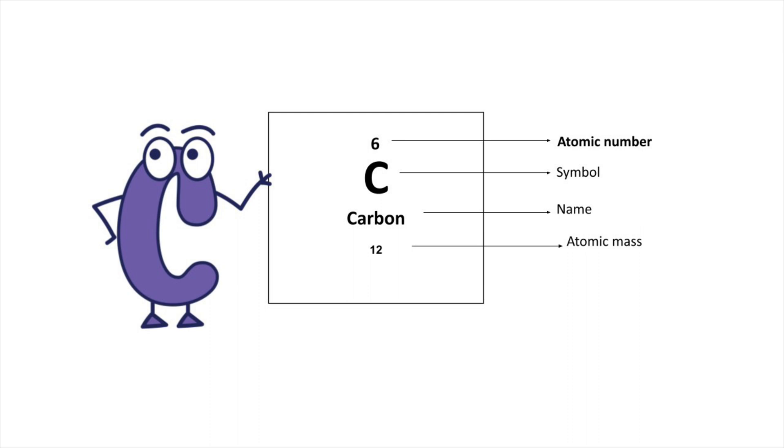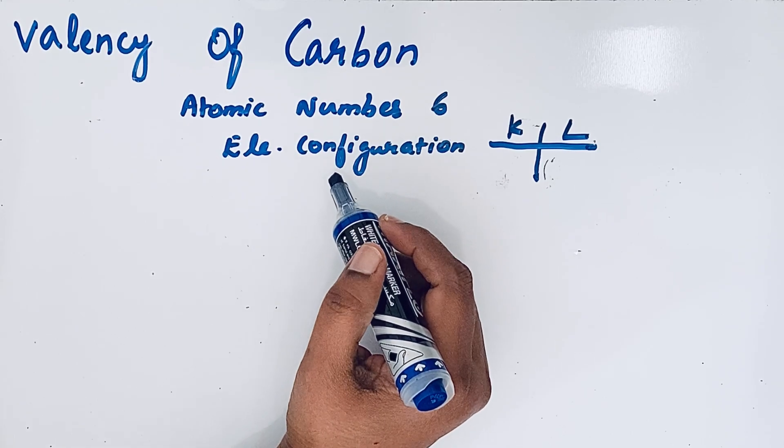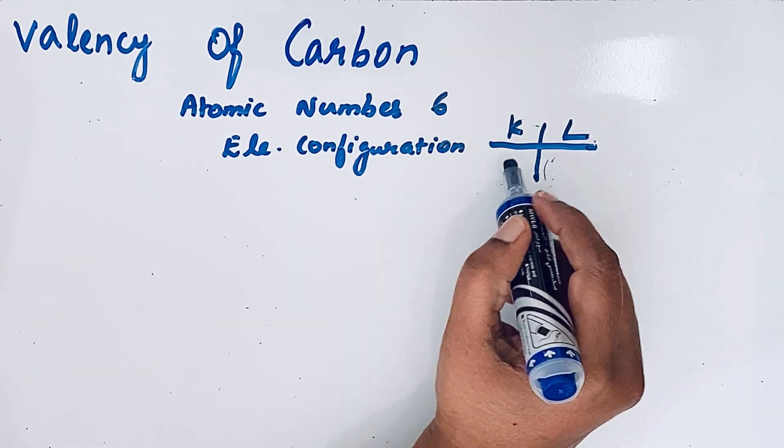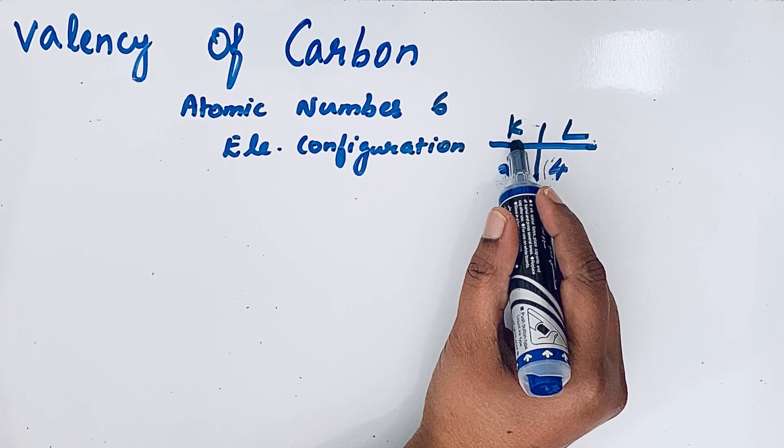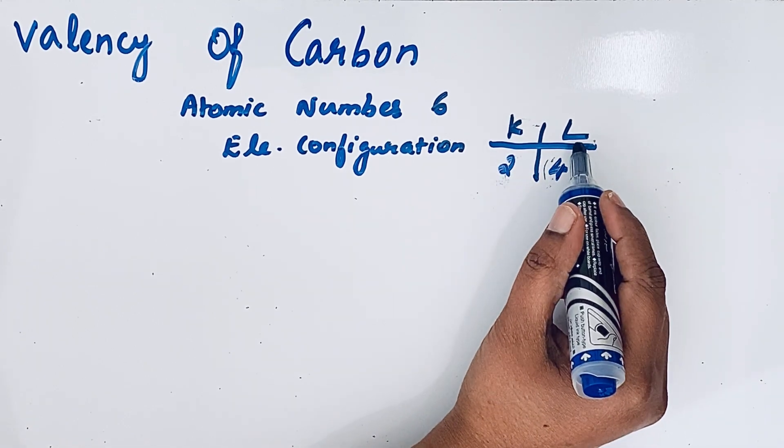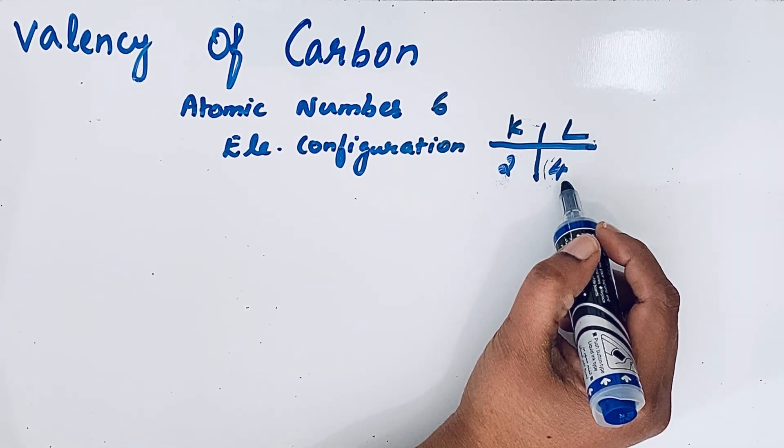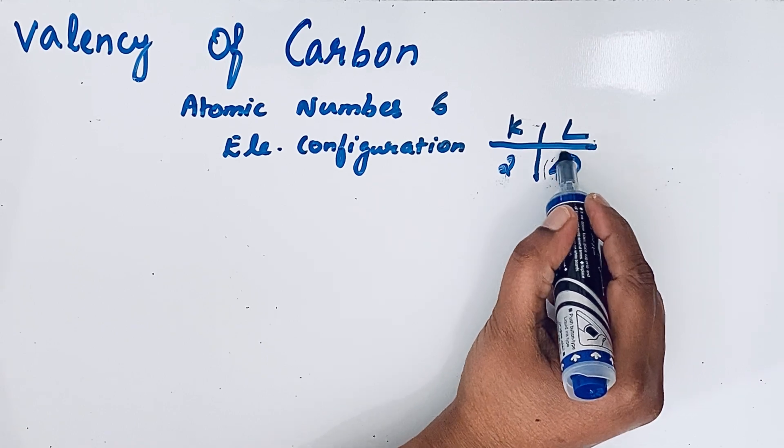Carbon's atomic number is 6. From that, we can write the electronic configuration: 2, 4. That means for carbon there are two electrons in the K shell (first shell) and four electrons in the L shell. The electrons in the outer shell are called valence electrons, so 4 is the valence electron for carbon.